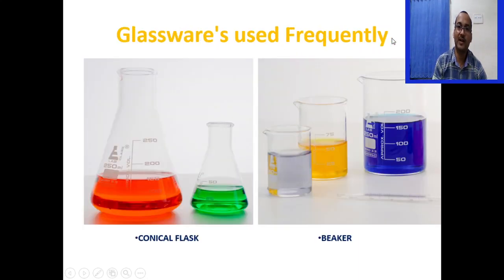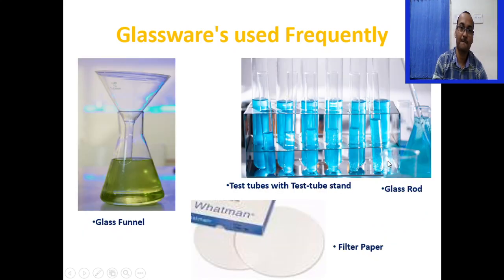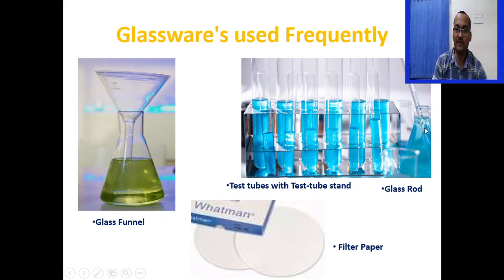The glasswares used frequently inside the chemistry lab include: conical flask in different sizes, beaker in different sizes, volumetric flask — where the lower meniscus of the liquid should touch the marked line — measuring cylinder in different sizes such as 100 ml, and reagent bottle where you store different chemicals. There is also a glass funnel and filter paper, used together to filter different reaction products, a test tube stored in a test tube stand, and a glass rod used for mixing or stirring.